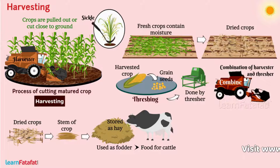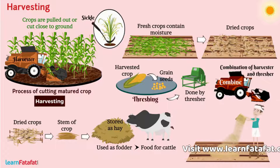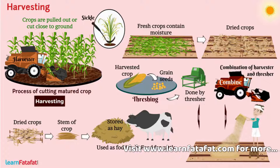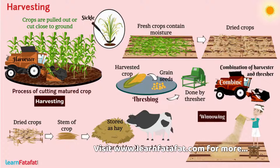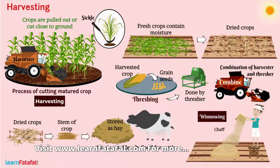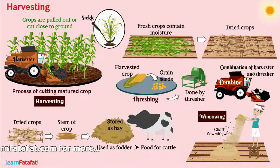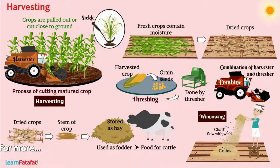Farmers with small holdings of land separate the grain and chaff by winnowing. The chaff, being lighter, flows away with the wind and falls away from the grains. Thus, grains are separated.